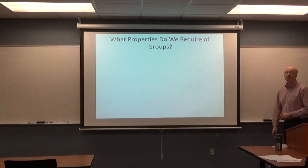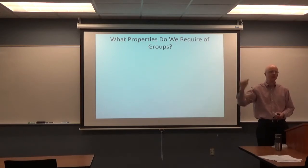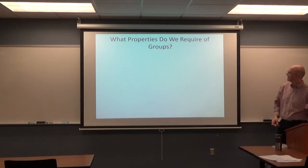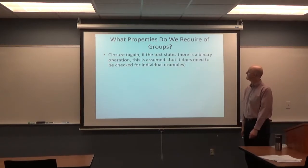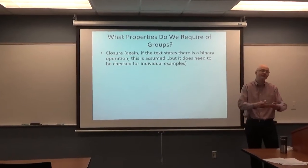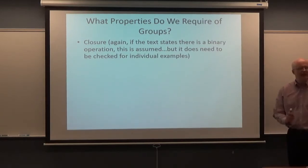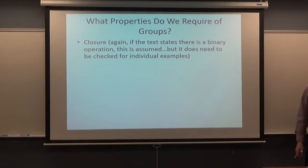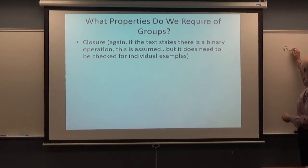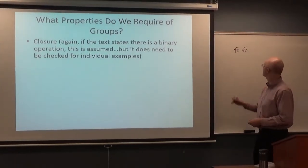All right. So let's be a little bit more formal now. What properties do we require of a group? Do you think you can name them based on what I've been doing before? Closure. Again, the text states that there is a binary operation. This is assumed in our textbook, not necessarily in other textbooks, that it means it satisfies closure. But that does need to be checked for individual examples. The book mentions a really good example to think about. If you think about the irrational numbers, which include things like square root of 2, square root of 3, pi, e, that kind of thing. Under multiplication, and you also include, say, the number 1, so you make sure you have an identity in it.